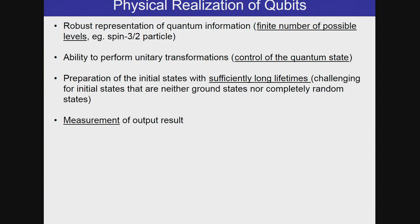And how do you physically realize the qubit? So you saw the humongous quantum computer on the first slide. It's not easy. So these are some conditions that would have to be satisfied. First, you need to have a robust representation of quantum information, which typically means you have a finite number of possible levels, such as in a spin-3/2 particle. Then you need to be able to control the quantum states, and this is very tricky. And you need to be able to prepare initial states with sufficiently long lifetimes. And this is challenging if you are not in the ground states or not in the completely random states. And also you have to measure the output result.